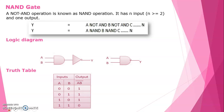Next is the NAND gate. A NOT and AND operation is known as a NAND operation. It is written as Y equals A NAND B NAND C, otherwise A bar dot B bar dot C bar. So NAND is the complement of the AND operation.